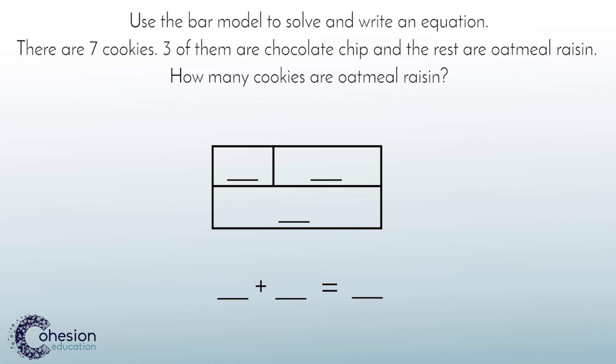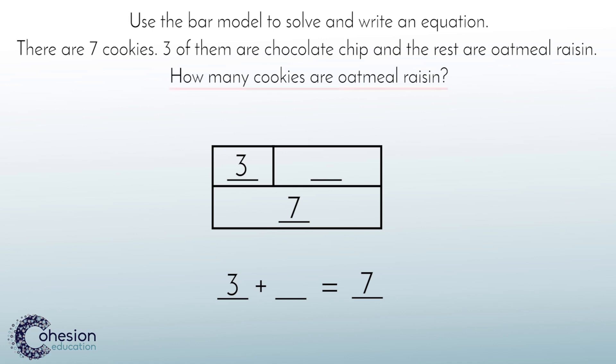Students will use the bar model to help them determine what they are solving for. Since the problem states that there are seven cookies and two different types, students will see that seven is the whole or total. They know that three of the cookies are chocolate chip, so they can fill in one part of the model with a three. This also represents one of the addends. Now students can see from the model that they are solving for a missing part — the oatmeal raisin cookies.